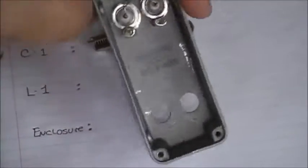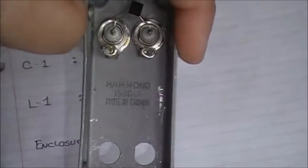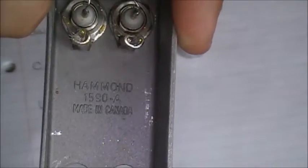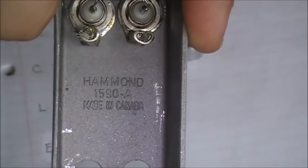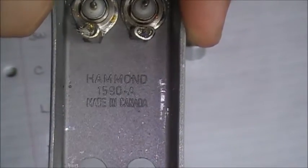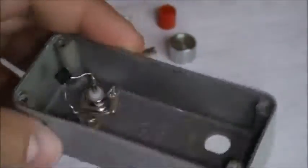The enclosure is a small aluminum box made by Hammond. The model number is the Hammond 1590-A - that's the enclosure I'm going to be using.